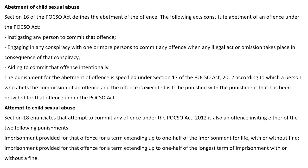Abetment of child sexual abuse — meaning to encourage or give incentive — is defined under Section 16. The acts considered as abetment of child sexual abuse include: instigating a person to commit the offense; engaging in any conspiracy with one or more people to commit the offense; when any illegal act takes place as a consequence of that conspiracy; and aiding to commit the offense intentionally, knowingly encouraging, or forming a conspiracy with a group to commit such an offense. These are punishable under Section 17 of the POCSO Act.